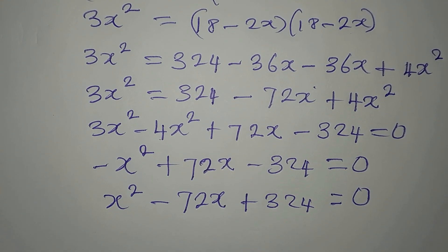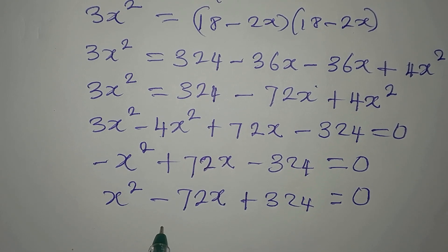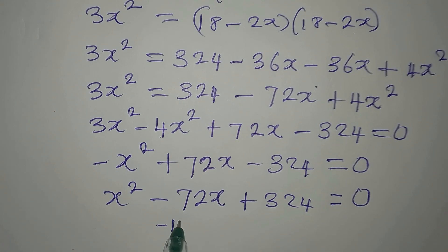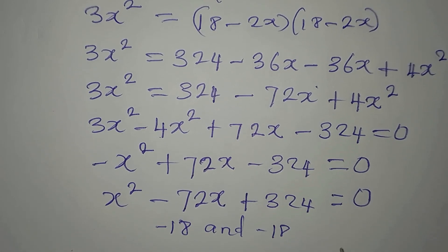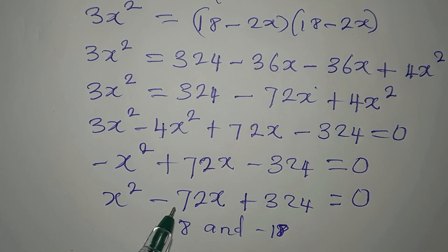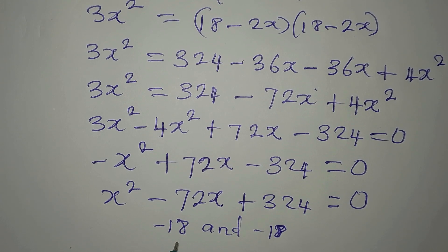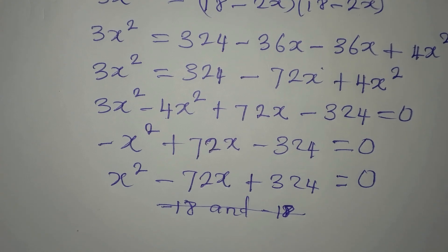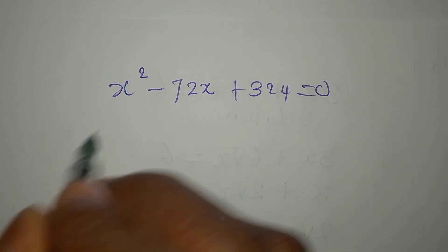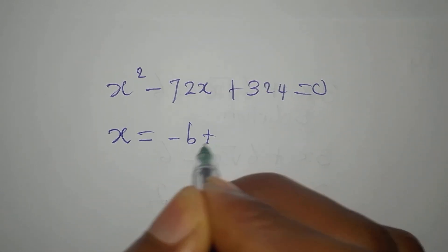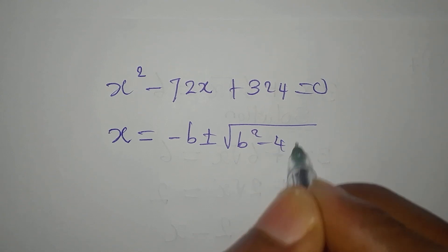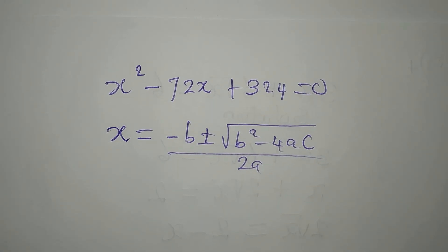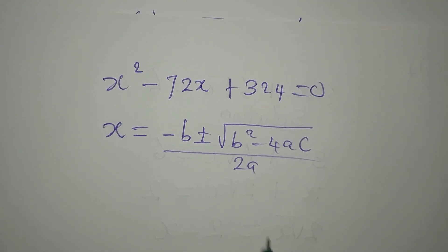Now we have a quadratic equation to deal with. We attempt to factorize, but after checking, minus 18 times minus 18 gives 324 but their sum does not give minus 72, so factoring doesn't work here. We will use the quadratic formula instead: x equals negative b plus or minus the square root of b squared minus 4ac, all over 2a.